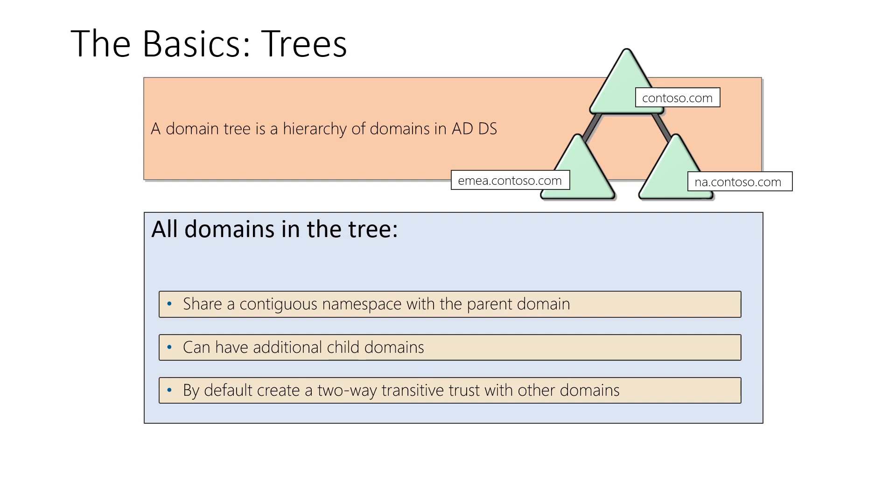As you can see on the screen, the main domain is contoso.com and then we have two child domains.